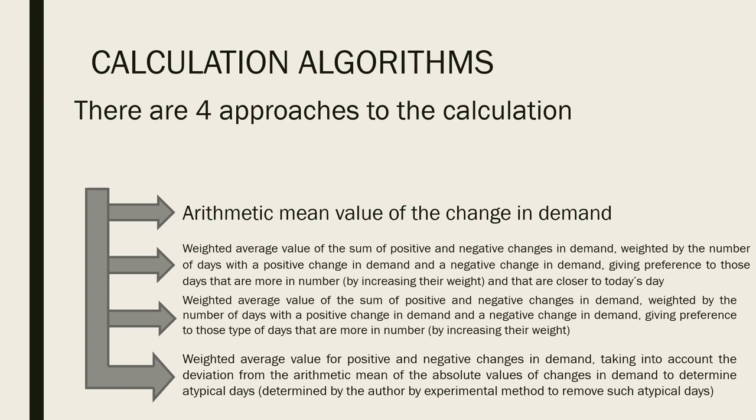And those that are closer to today's day. The fourth algorithm is derived from arithmetic mean and weighted average value of the two previous algorithms. It is weighted average value for positive and negative changes in demand, taking into account the deviation from the arithmetic mean of the absolute values of changes in demand to determine atypical days. We need to determine these days which can distort our data, which can make our forecasting results look very bad. We need to discard these days. This method was discovered by the author experimentally to remove such atypical days.